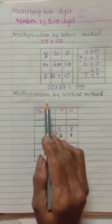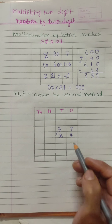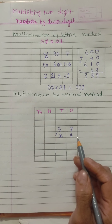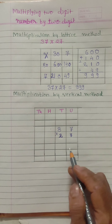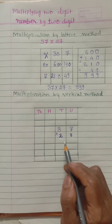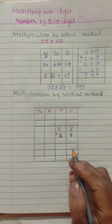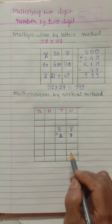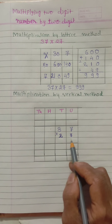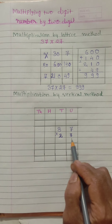Now we will do our multiplication by our new method — the vertical method. It is very useful in all the next classes. Just like when you go to the next class, you have to use this method. So this is our vertical method: 37 multiplied by 27.